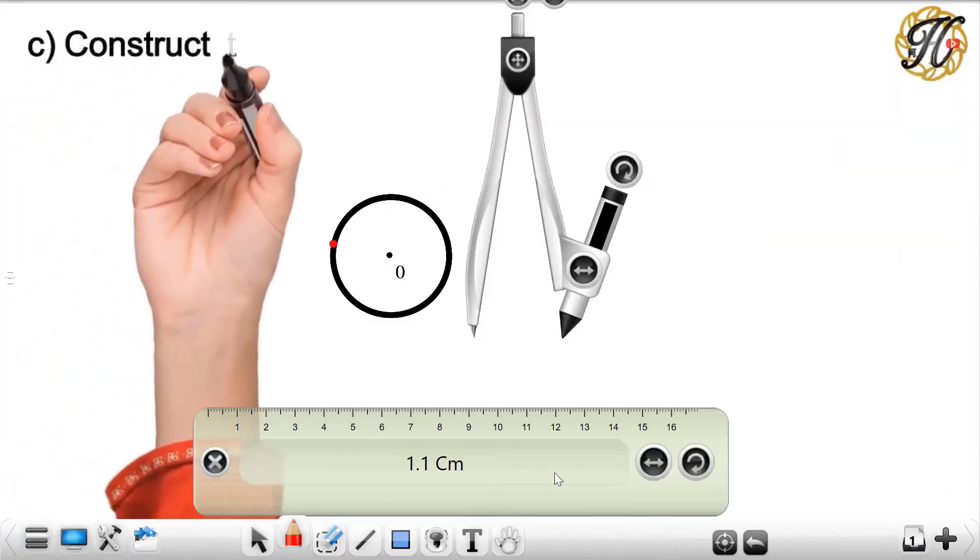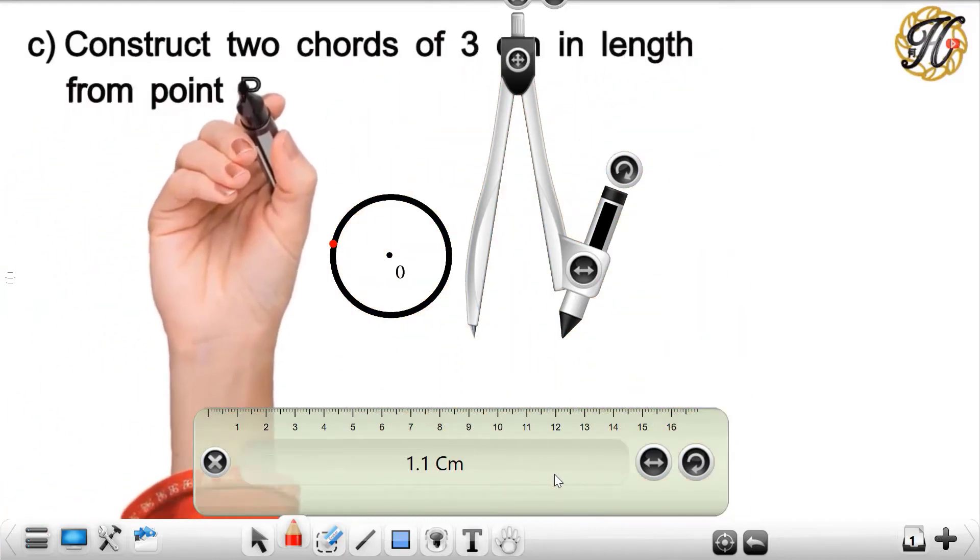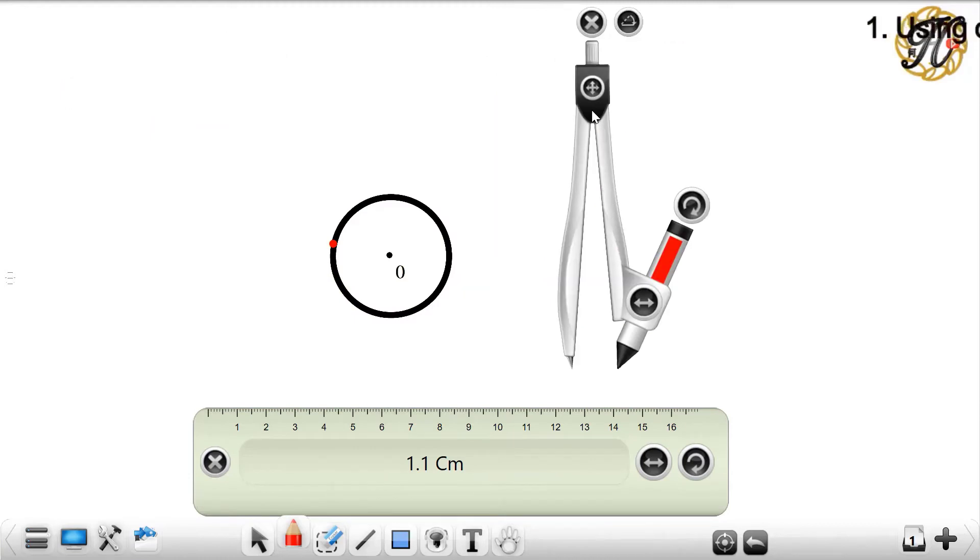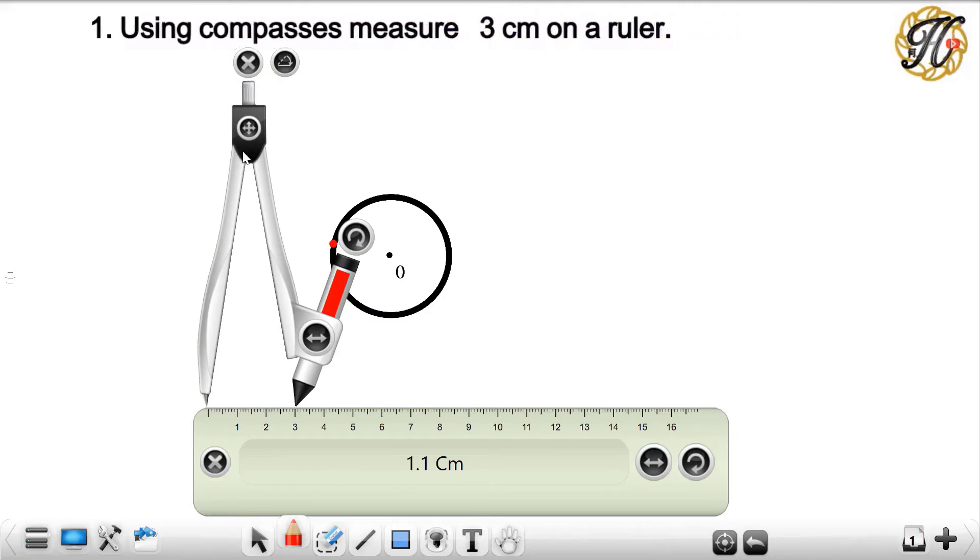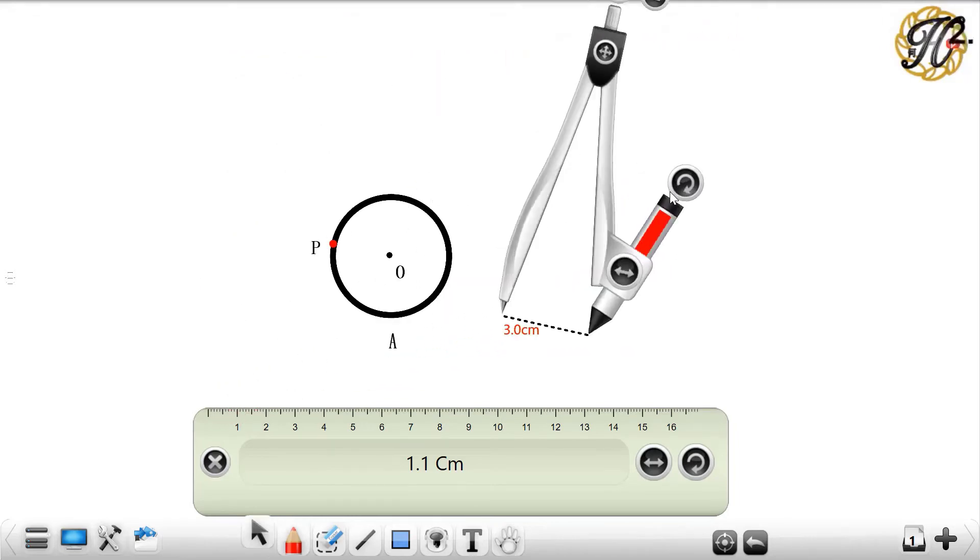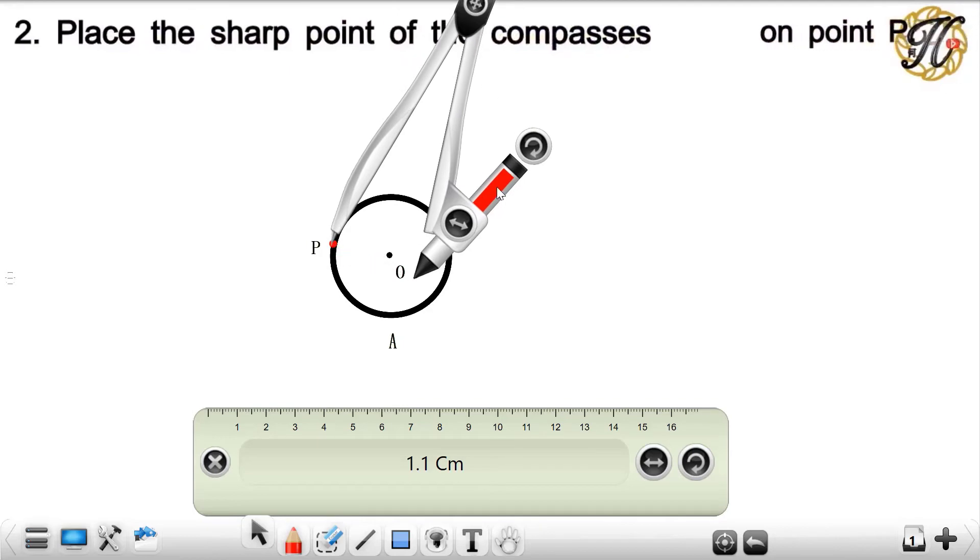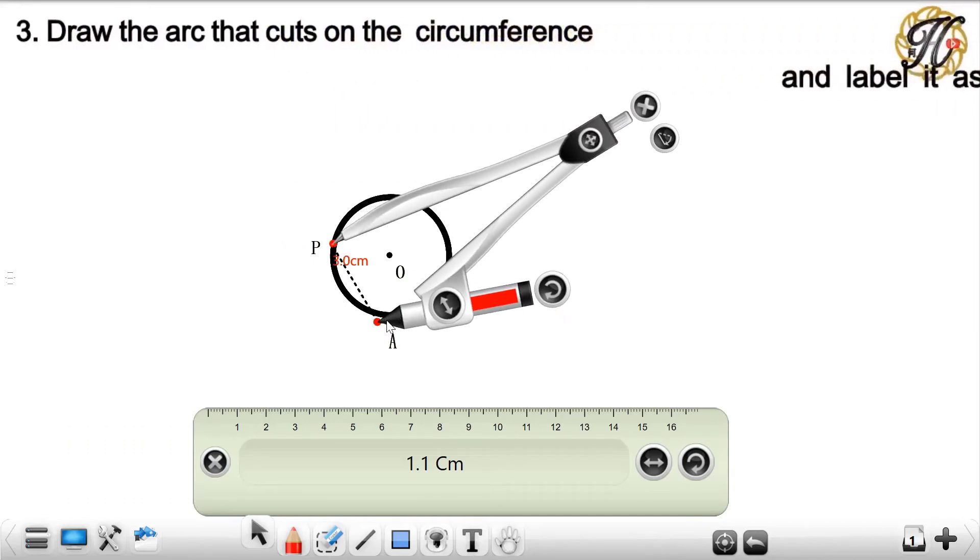Next, construct two cords of 3 cm in length from point P on a circle. First, using compasses, measure 3 cm on a ruler. Second, place the sharp point of the compasses on point P. Next, draw the arc that cuts on the circumference and label it as point A.